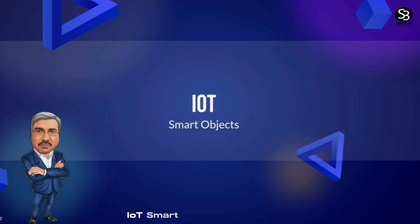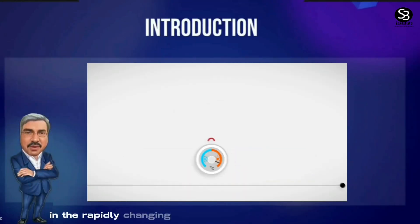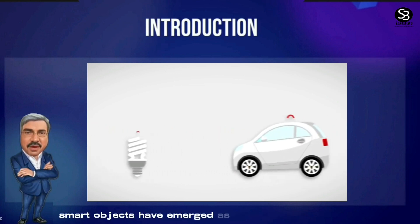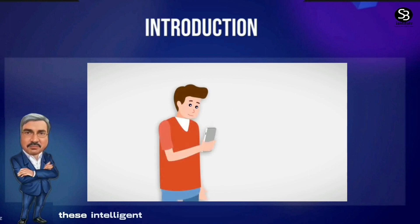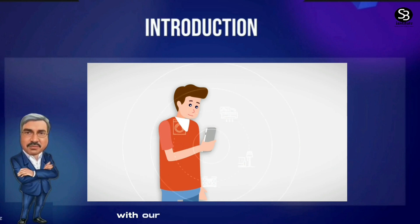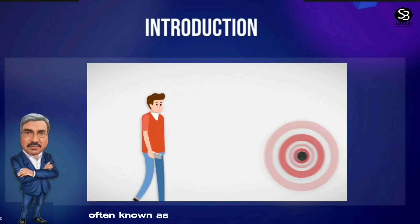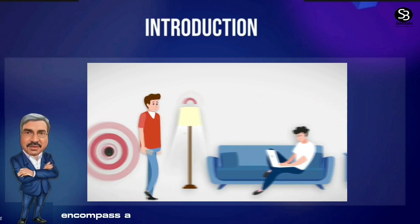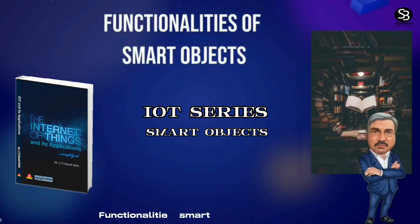IoT smart objects introduction. In the rapidly changing landscape of technology, smart objects have emerged as a competitive and transformative force. These intelligent and connected devices have revolutionized how we interact with our surroundings. Smart objects, often known as Internet of Things (IoT) devices, encompass a wide range of everyday items.